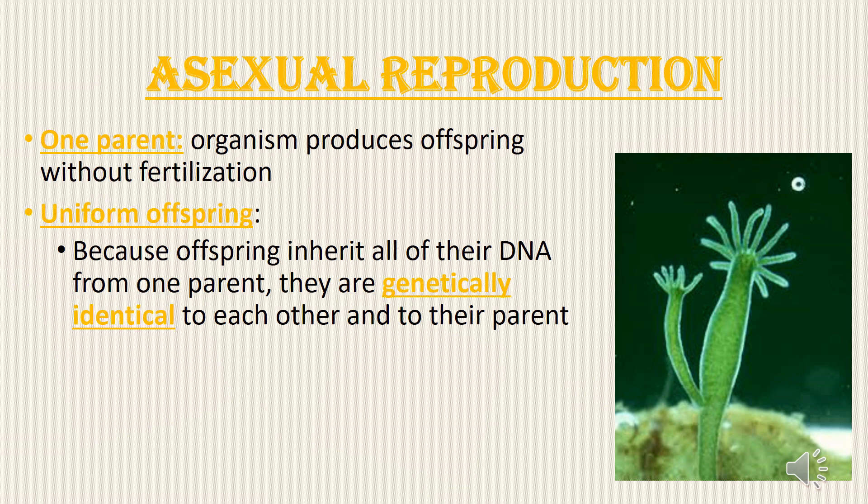Asexual Reproduction: One parent organism produces offspring without fertilization. Because offspring inherit all of their DNA from one parent, they are genetically identical to each other and to their parent — these are called uniform offspring.